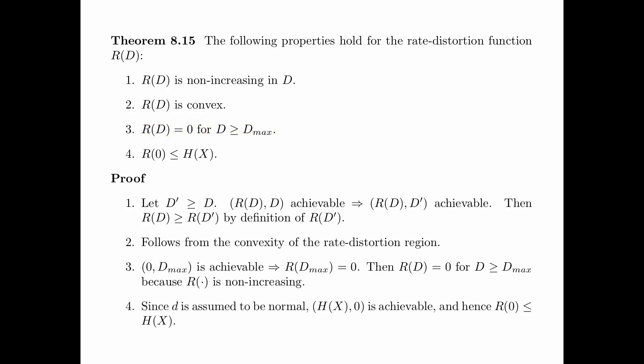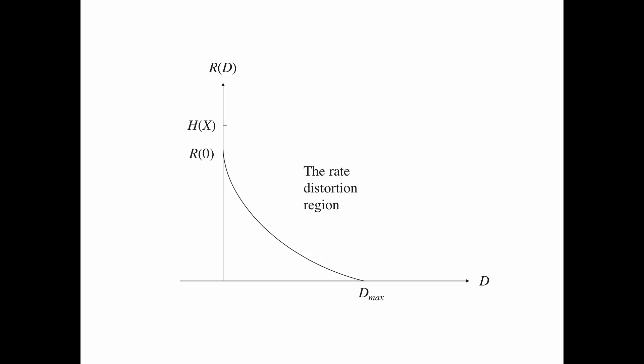For property 4, since D is assumed to be normal, the pair (H(x), 0) is achievable. By the source coding theorem, at rate H(x), the source sequence can be reconstructed almost exactly. And if so, because D is normal, the expected distortion can be made arbitrarily small. Therefore, H(x) is greater than or equal to R(0), and hence R(0) is less than or equal to H(x). This proves property 4. The illustration of the R(D) curve shows that R(D) is non-increasing and convex, R(D) equals 0 for D greater than or equal to D_max, and R(0) is less than or equal to H(x).